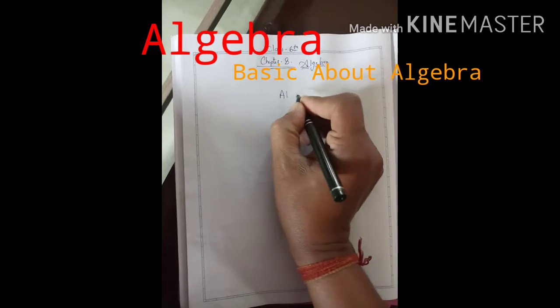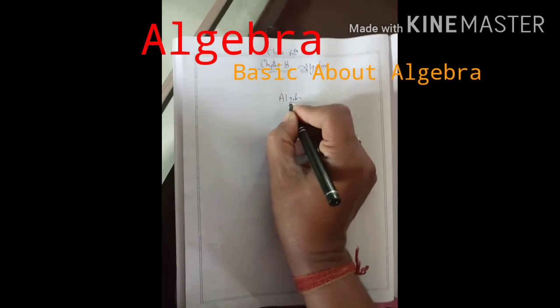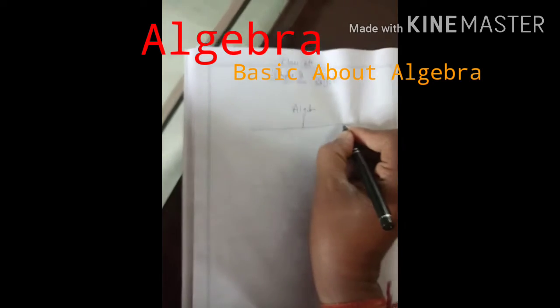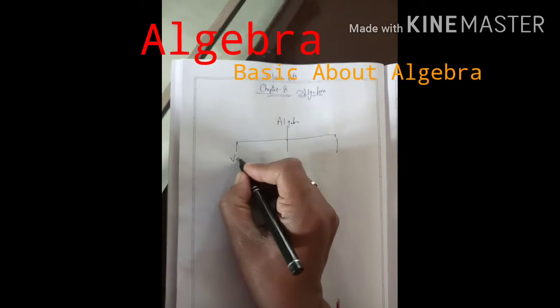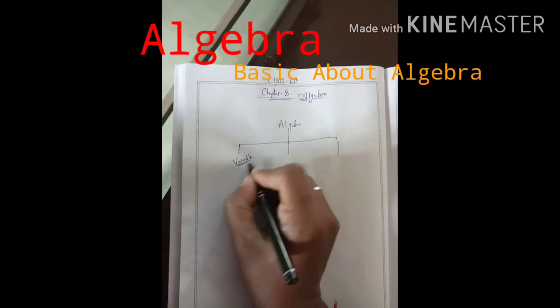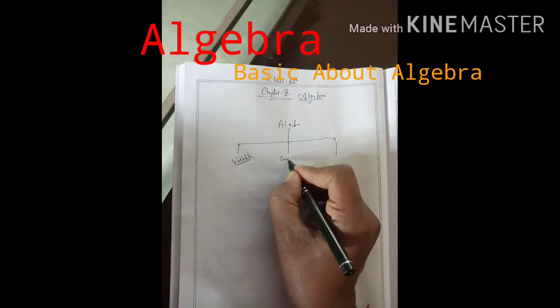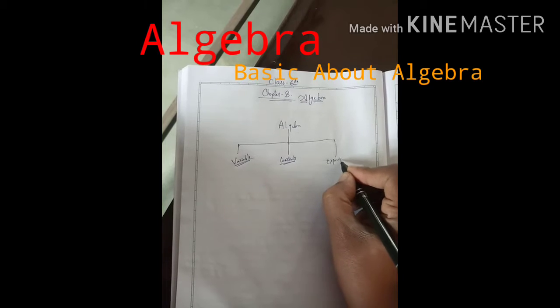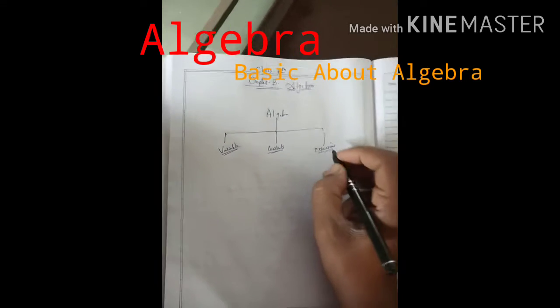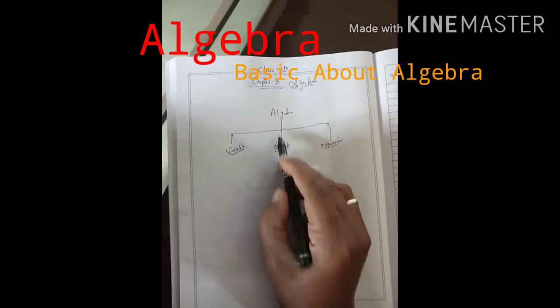So first of all, I will tell you the basics — what we actually have to do. So let's start chapter 8: Algebra basics. Algebra is classified into three groups. First: variable, then constants, then expressions.